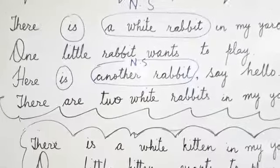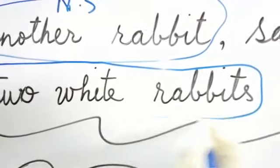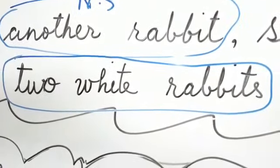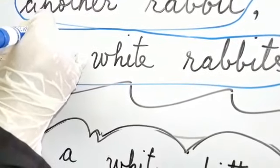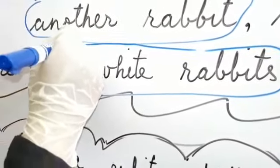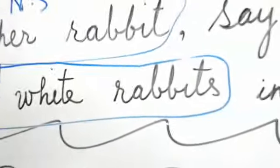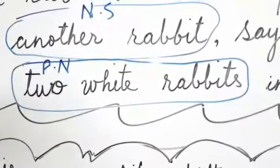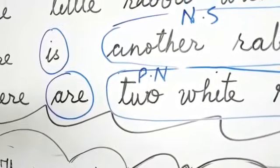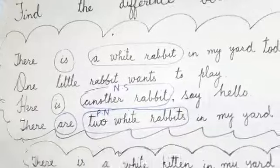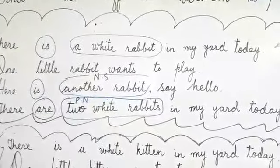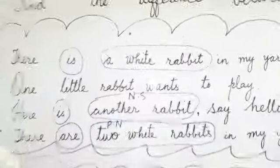Let's come to how many rabbits we have. 'There are two white rabbits.' How many rabbits? Two white rabbits. Two shows a plural noun. Two white rabbits shows that there are more rabbits here. So the linking verb 'are' comes here. If the noun is singular, we write 'is' because of 'a' — 'a' shows one.